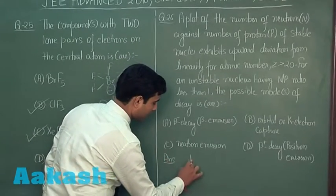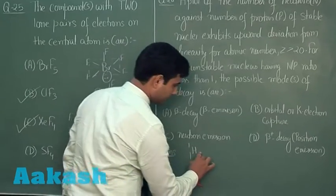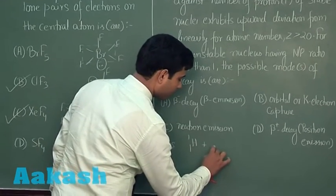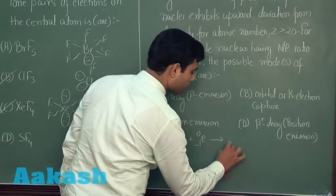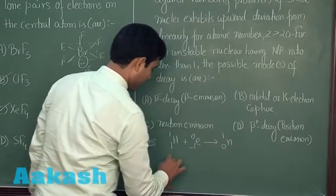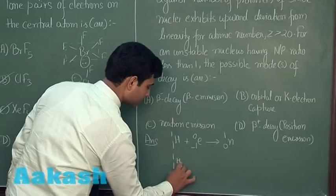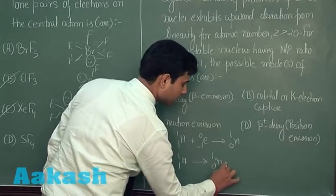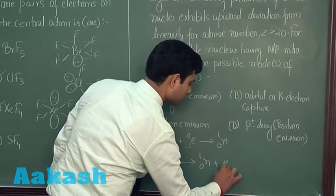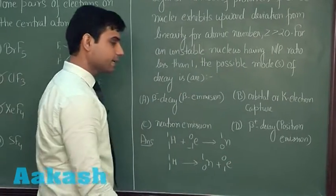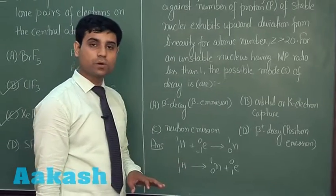If K electron capture takes place, it will give us a neutron and if we have beta emission, in that case also we get a neutron.